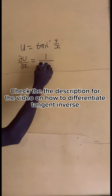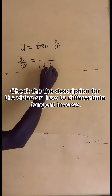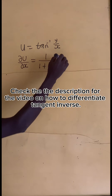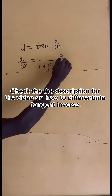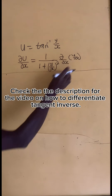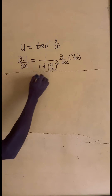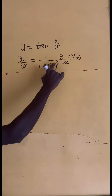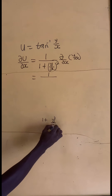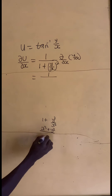This gives us 1 divided by 1 plus the square of the angle, that is y on x, all squared. And then we differentiate y on x partially with respect to x. Now let's take 1 on 1 plus y on x squared and then simplify. This gives 1 plus y squared on x squared, which simplifies to x squared plus y squared divided by x squared.